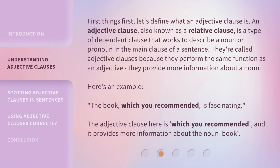First things first, let's define what an adjective clause is. An adjective clause, also known as a relative clause, is a type of dependent clause that works to describe a noun or pronoun in the main clause of a sentence. They're called adjective clauses because they perform the same function as an adjective — they provide more information about a noun.